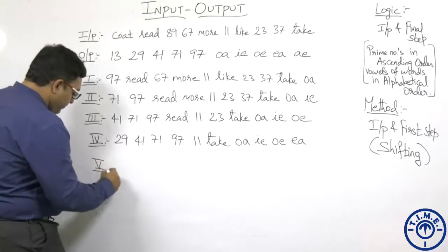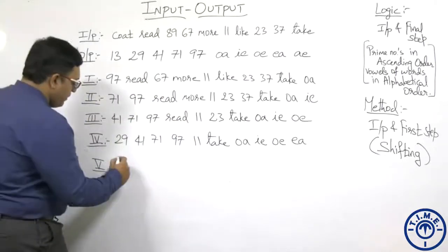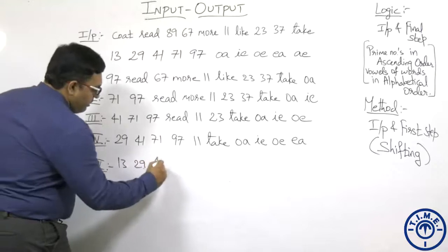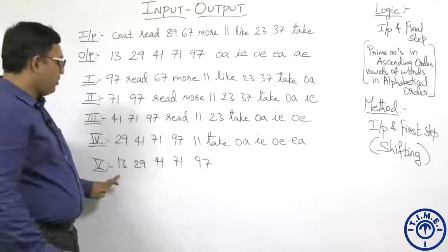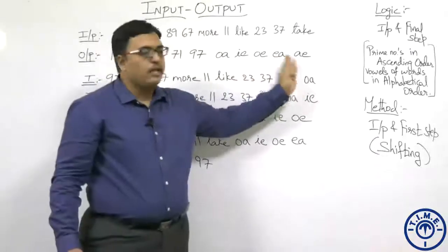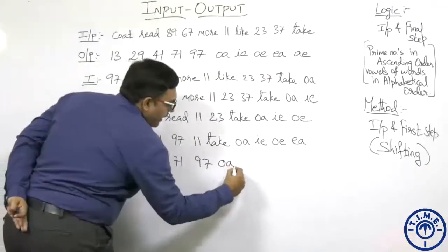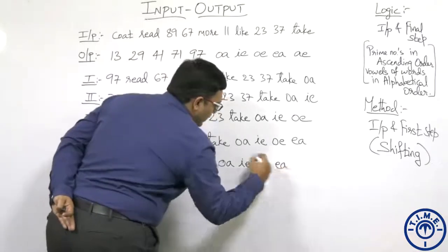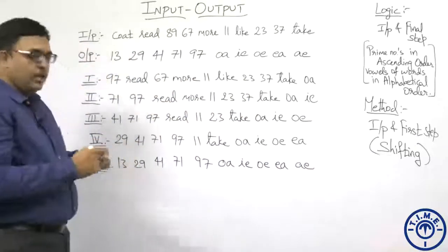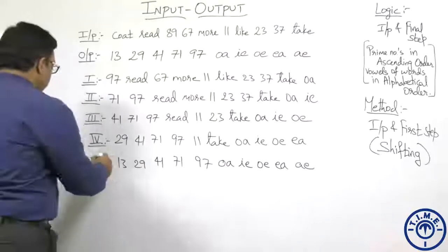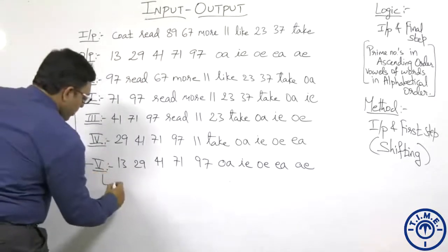Coming to step 5: before 29 is 13, which comes from 11. Step 5: 13, 29, 41, 71, 97 — 11 should not be repeated — then take becomes AE and goes to last. So: OA, IE, OE, EA, AE. AE comes from take. Comparing step 5 with the output, they are one and the same, so step number 5 is the final step.